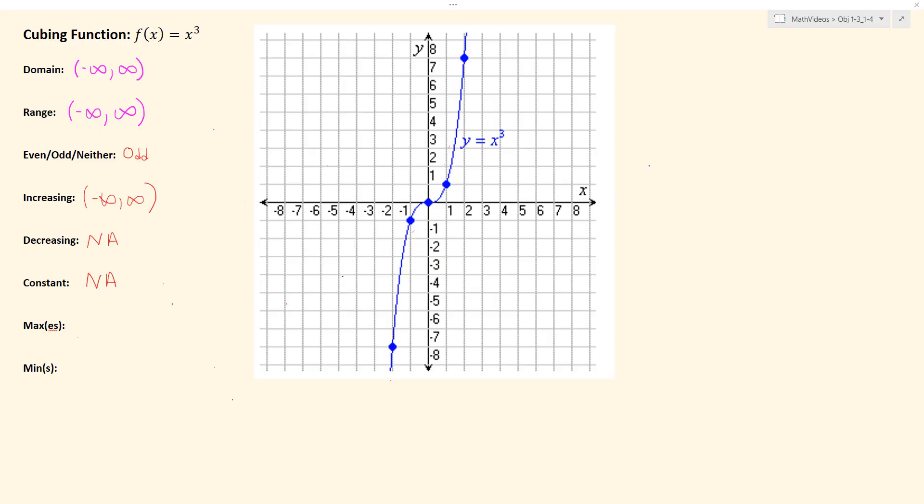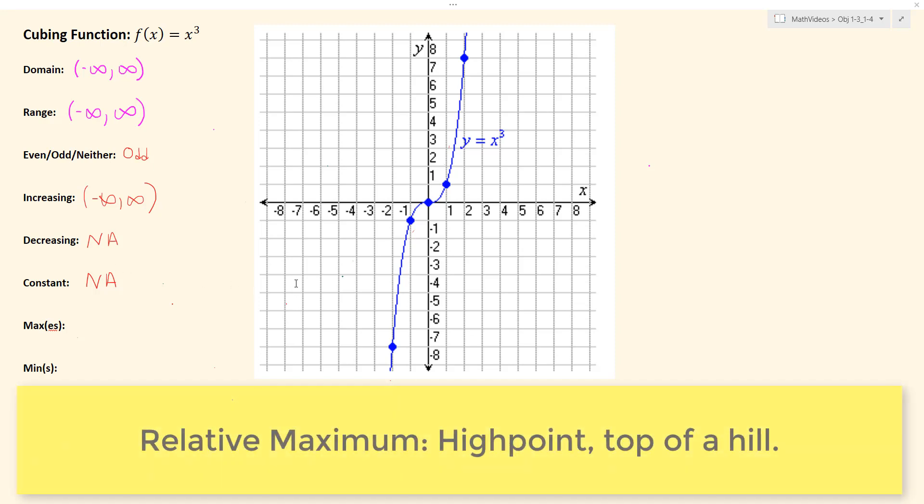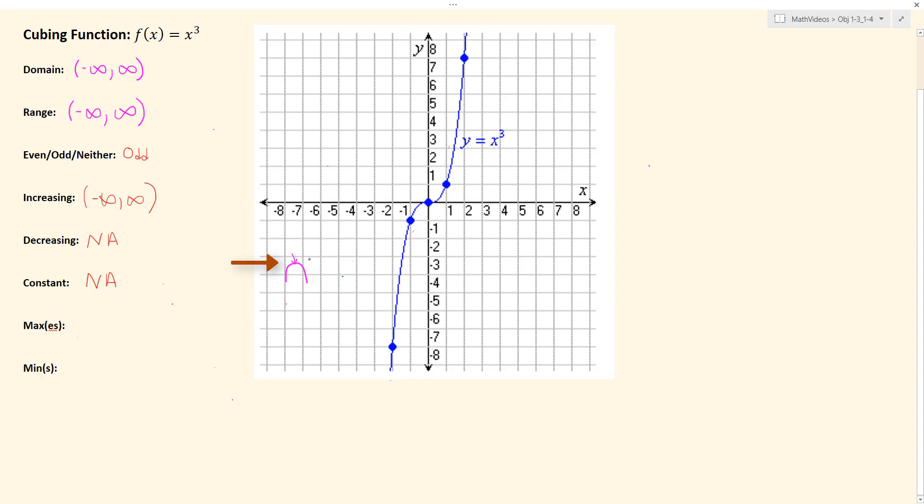Now let's go ahead and talk about relative maximum and minimum points. So a relative maximum is basically a high point, and a high point typically looks like the top of a hill. That point would be the relative maximum.